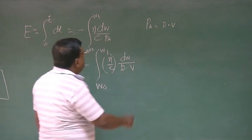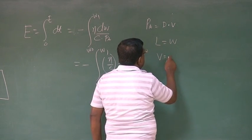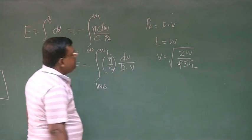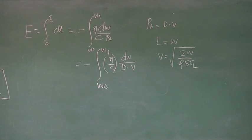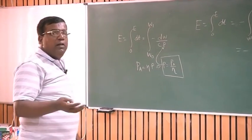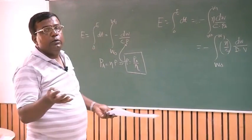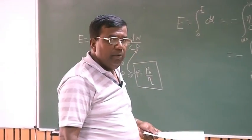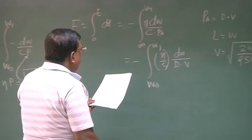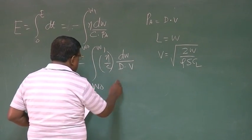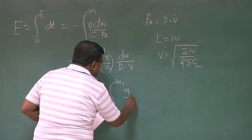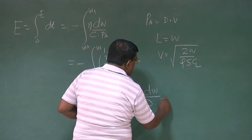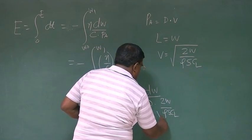Now what is V? From lift equal to weight, I know V equal to square root of 2W by ρSCL. What is ρ? The altitude at which the airplane is flying. CL is the CL cruise. Typical value of CL cruise for most efficient airplane will be around 0.2, 0.3, but if you are flying at different altitudes for different conditions, the CL may change. So now I will substitute here value of V.